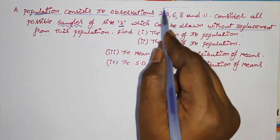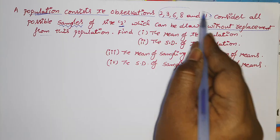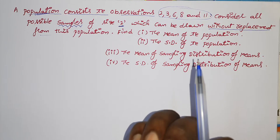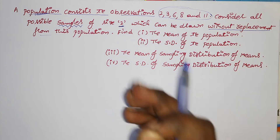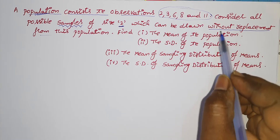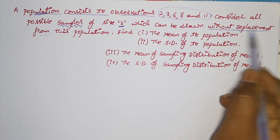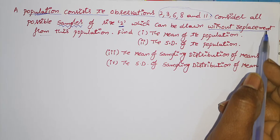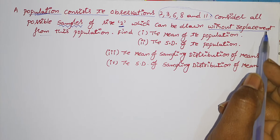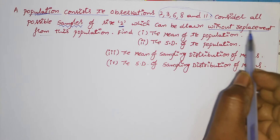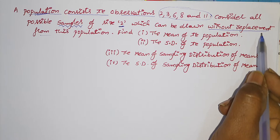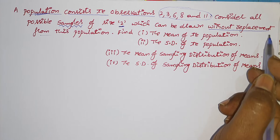From all 5 observations, you have to collect samples of size 2 — that means you take 2 observations from these 5 observations without replacement. There are two methods to collect samples from the population: the without replacement method and the with replacement method.